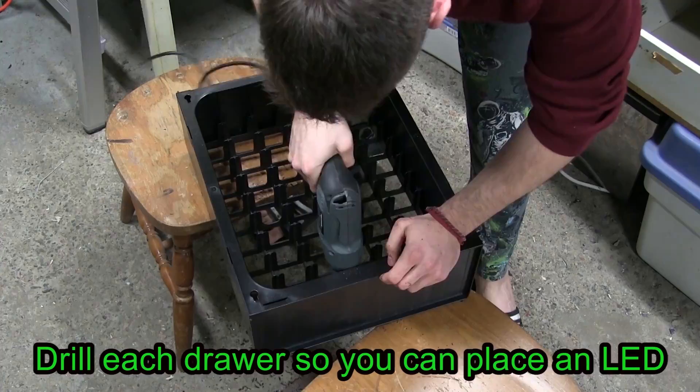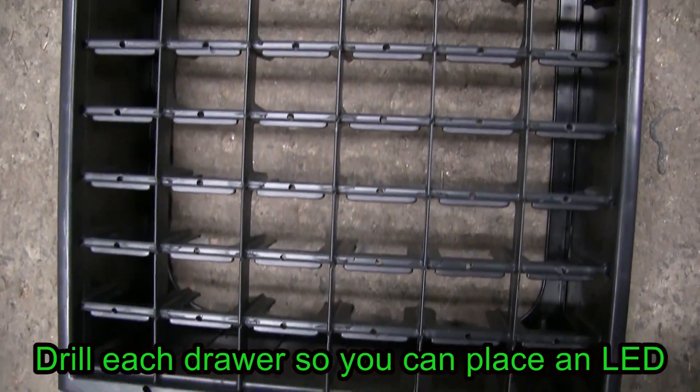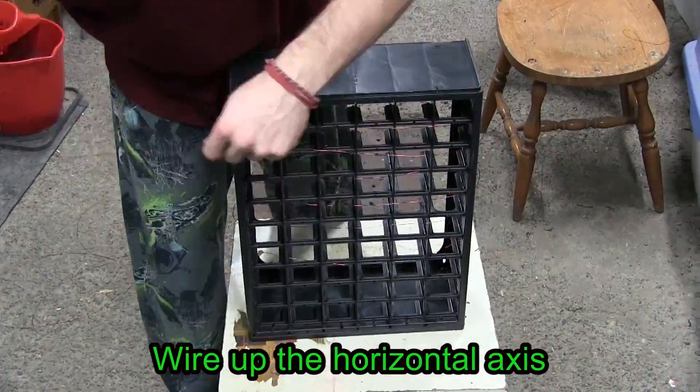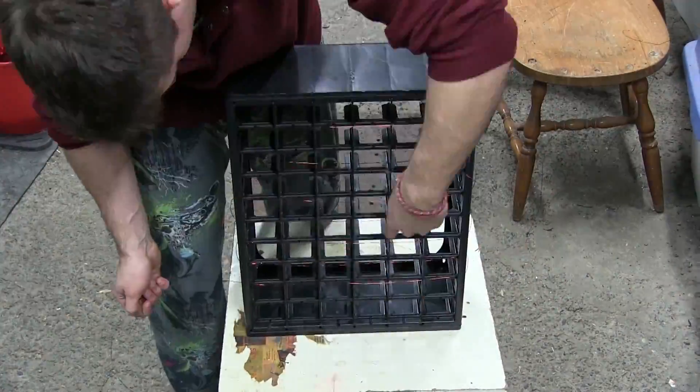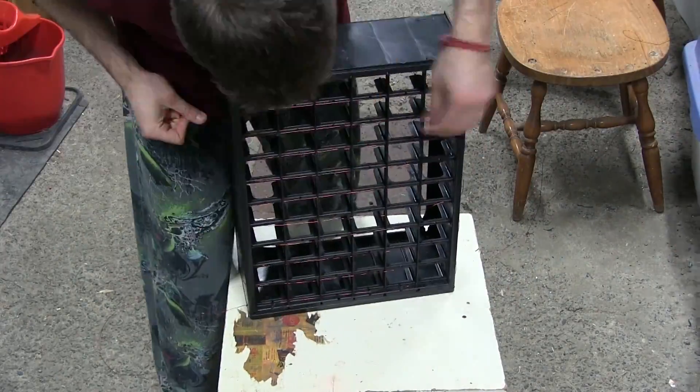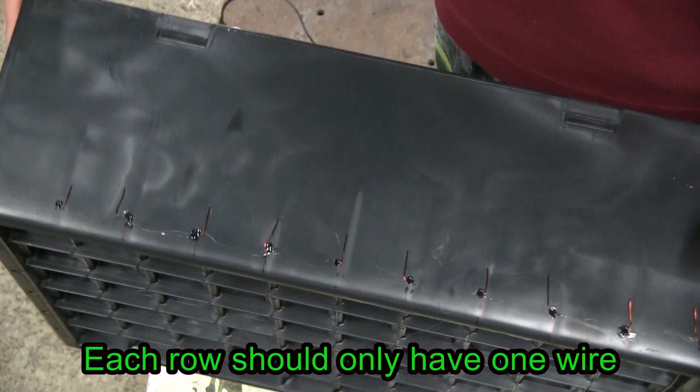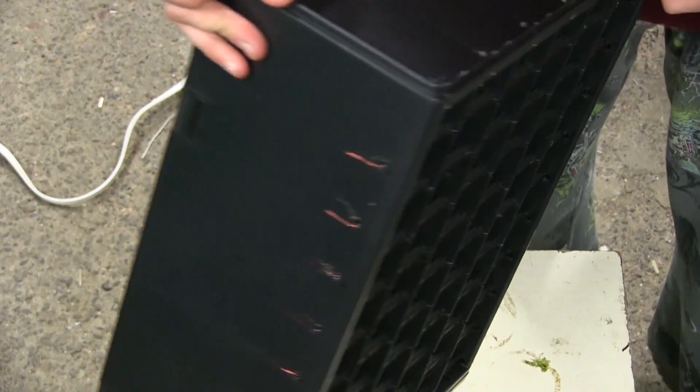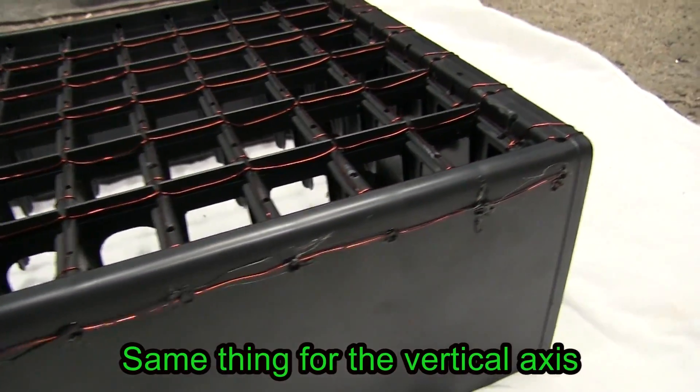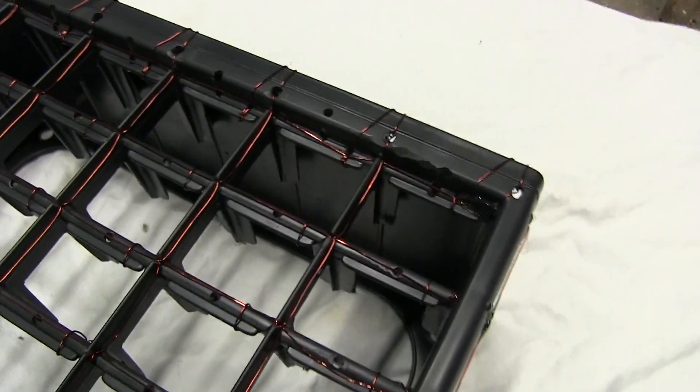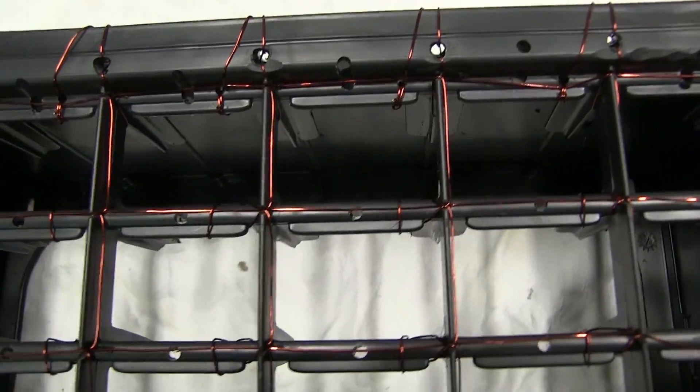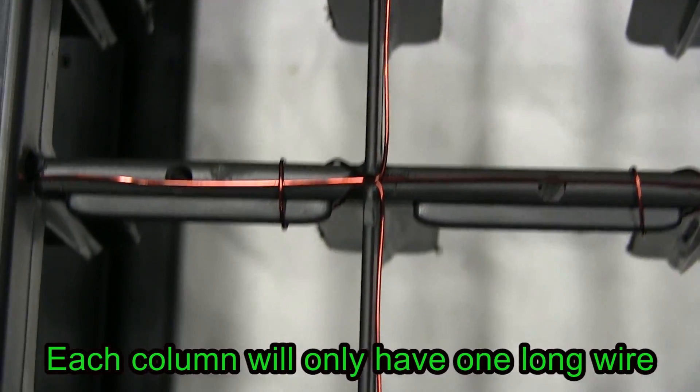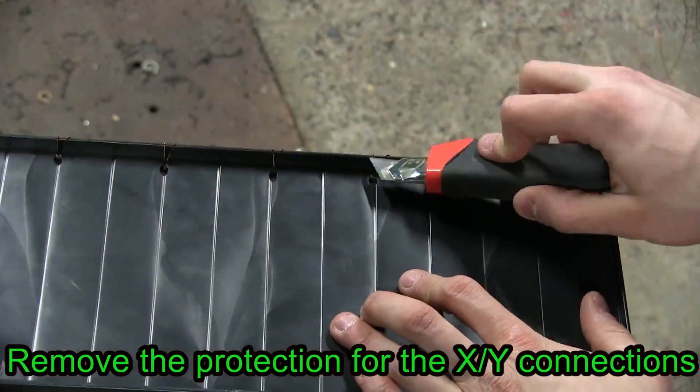Drill each drawer so you can place an LED. Wire up the horizontal axis. Each drawer should only have one wire. Same thing for the vertical axis. Each column will only have one long wire.